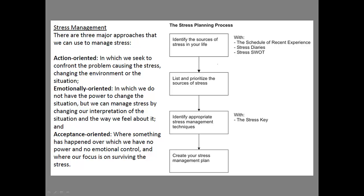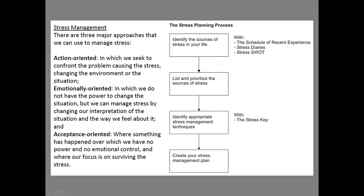The stress planning process goes like this: identify the sources of stress, list and prioritize them, identify appropriate stress management techniques — that's the action, emotional, or acceptance approach — and then create a stress management plan.